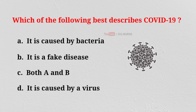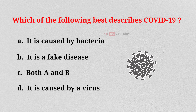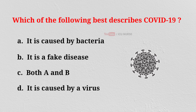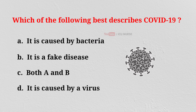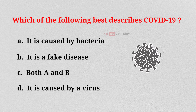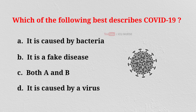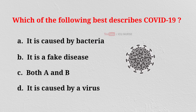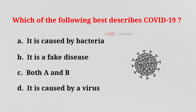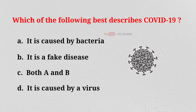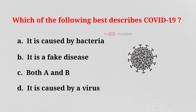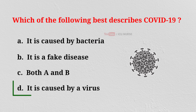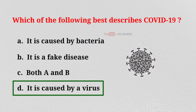Which of the following best describes COVID-19? A. It is caused by bacteria. B. It is a fake disease. C. Both A and B. D. It is caused by a virus. And the correct answer is D: It is caused by a virus.